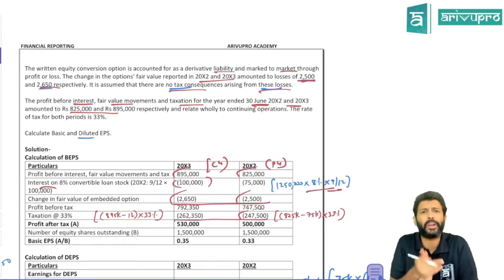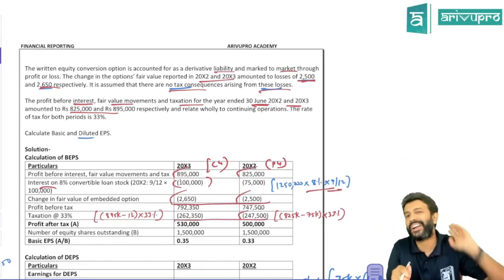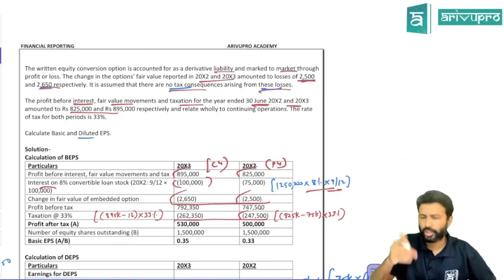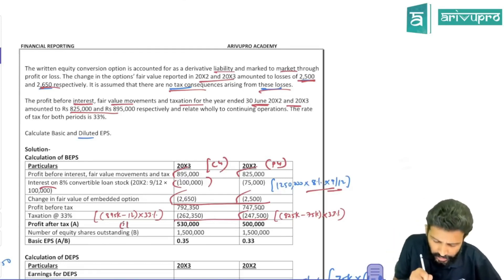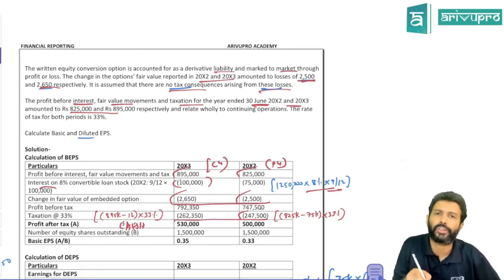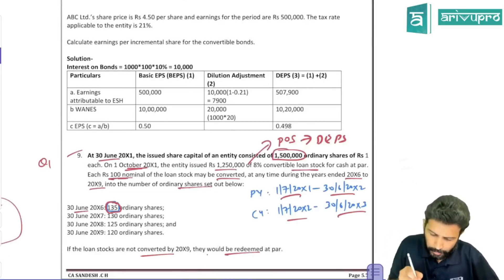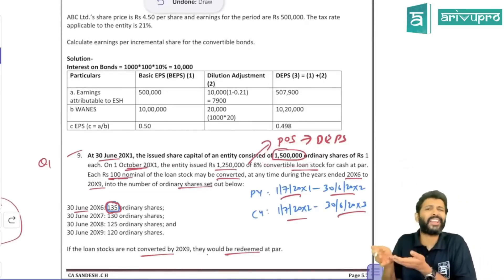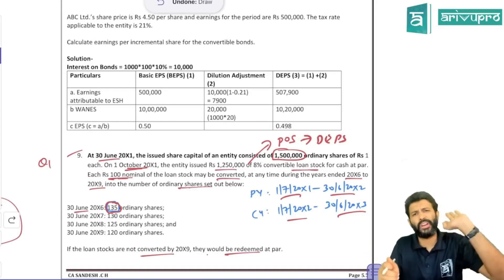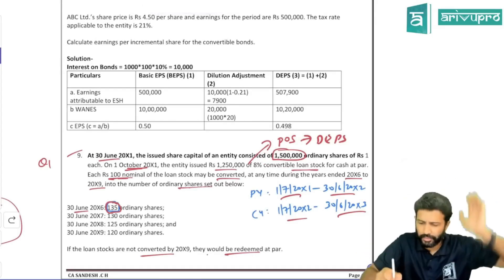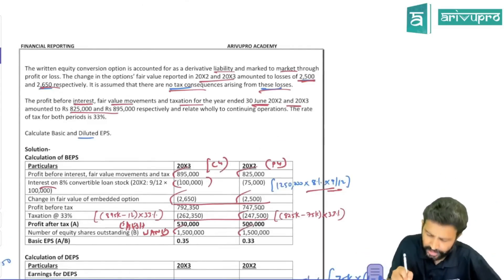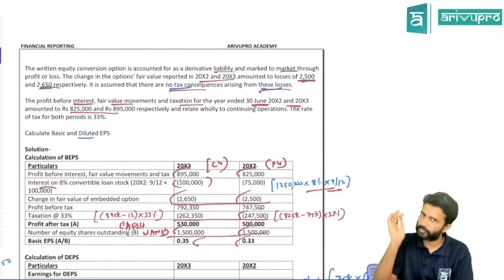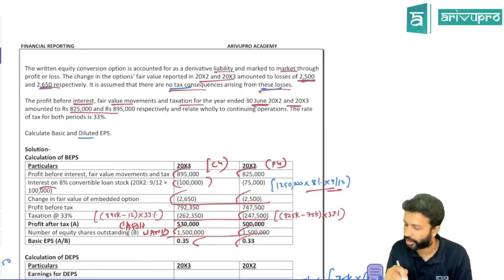Now for diluted EPS: take the EISH calculated for basic EPS — say 5,30,000. Add the dilution adjustment. If you convert the debentures into equity shares, you save interest. In the last year, interest was 75,000, so add 75,000 × (1 − 0.33) = 75,000 × 0.67. Additionally, if you convert the debentures, you no longer value them under FVTPL, so you also save the fair value loss. Add that too — but without multiplying by (1 − tax rate) since the problem states fair value has no tax consequences.